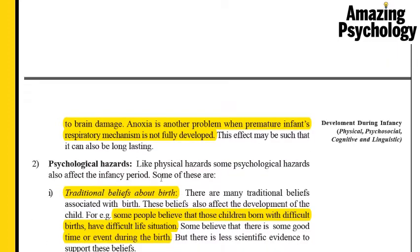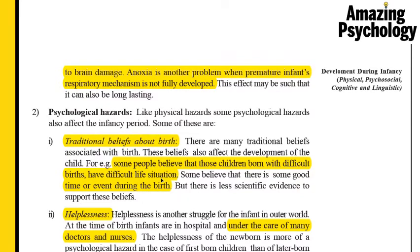Now let's look at psychological hazards. You might think that it's just physical hazards that can affect a child and that the child is not aware of its surroundings, but that's not true. The first psychological hazard is traditional beliefs about birth. The child doesn't have any beliefs about birth, but its parents and extended family do. Some people believe that if the child was born after a long labor with many complications, the child will have difficulty during its entire lifetime.